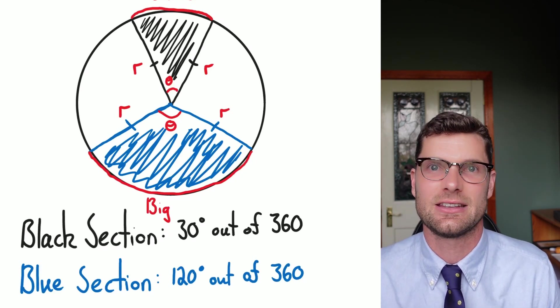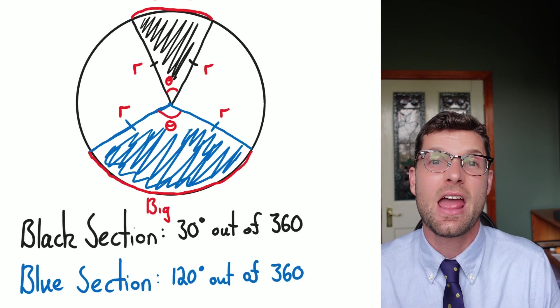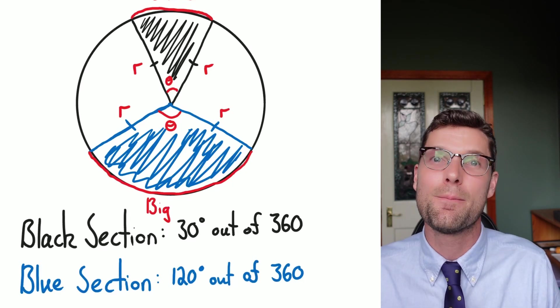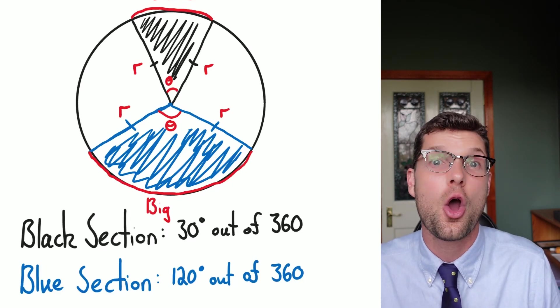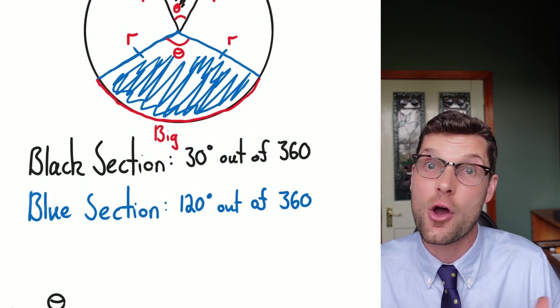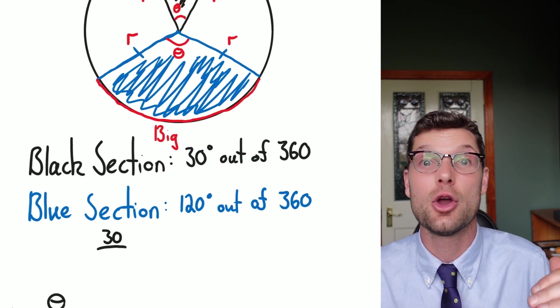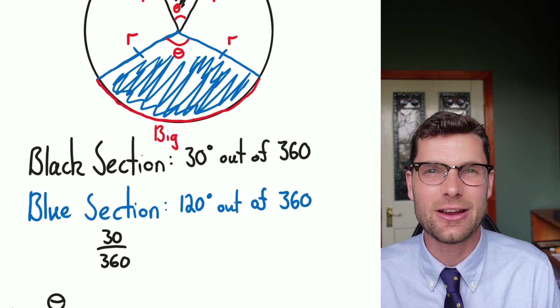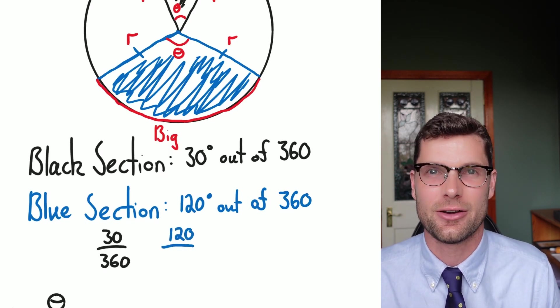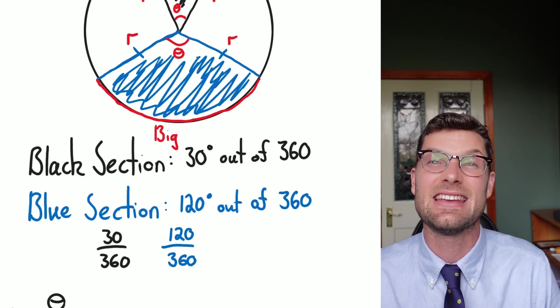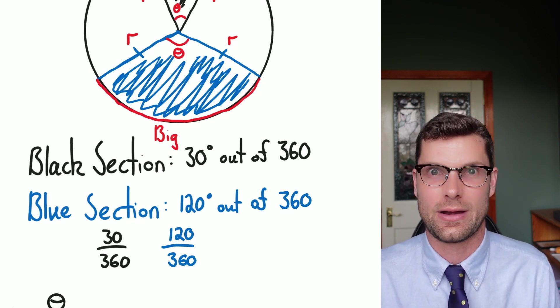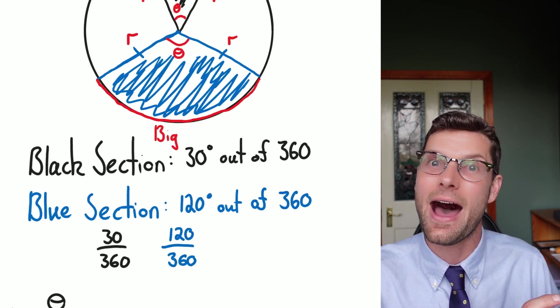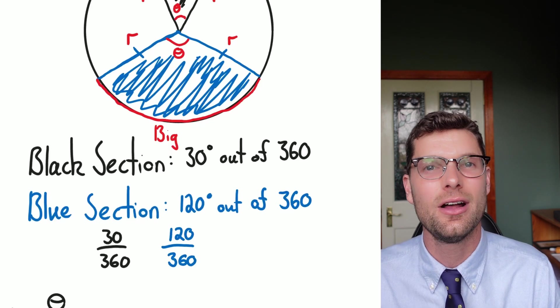If we're taking these two sentences and putting them into mathematical language, we could say that the first black section is taking 30 out of 360 and write that as a fraction, so 30 over 360. And the blue section is 120 over 360. We've got a part divided by the whole to tell us how much we've actually got.